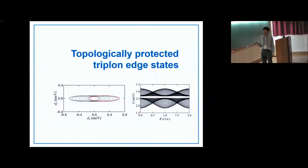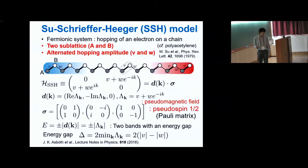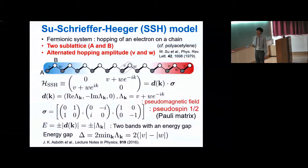Next, I discuss the topological properties of this triplon band and indicate that topologically protected triplon edge states are expected in this model. First, I neglect the pair creation and pair annihilation terms and consider only a reduced model. By block diagonalization, it can be reduced to a simple 2×2 matrix. Before discussing the topology of this compound, I introduce the Su-Schrieffer-Heeger (SSH) model, which is highly related to the topology of the previous model.